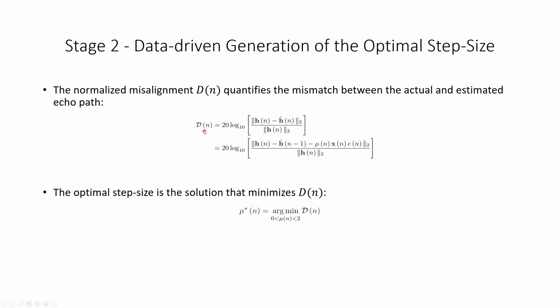How do we propose to generate data for the optimal step size? We take a look at the quantity that matters most in the NLMS convergence, which is the normalized misalignment. The normalized misalignment quantifies the mismatch between the actual and estimated echo paths. It's the difference, essentially, between the estimated and real echo path, and it's normalized.